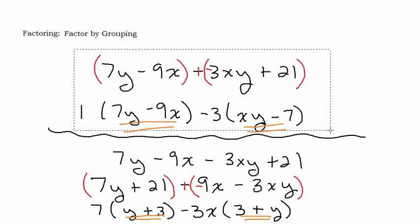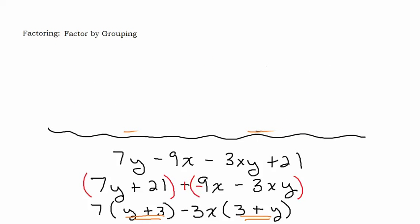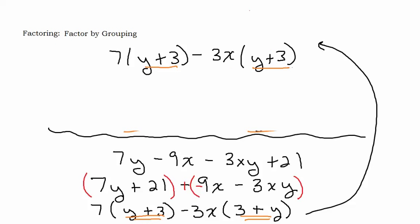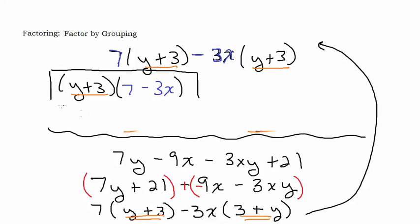So I have 7 times (y + 3) plus negative 3x times (y + 3). I'll rewrite (3 + y) as (y + 3) to make them look the same. I factor out (y + 3) and I'm left with (7 minus 3x). So the answer is (y + 3)(7 − 3x). If you FOIL that out you end up with what we started with.